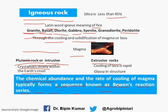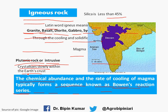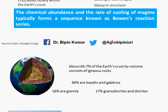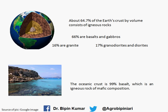One basic reaction that occurs is called Bowen's reaction series. The chemical abundance and rate of cooling of magma typically form a sequence known as Bowen's reaction series. In India, the areas covered by igneous rocks include the Deccan Plateau, which is mainly made of igneous rocks, covering the whole of Maharashtra, parts of Madhya Pradesh, and some extent of Uttar Pradesh — these are made of lava flows.